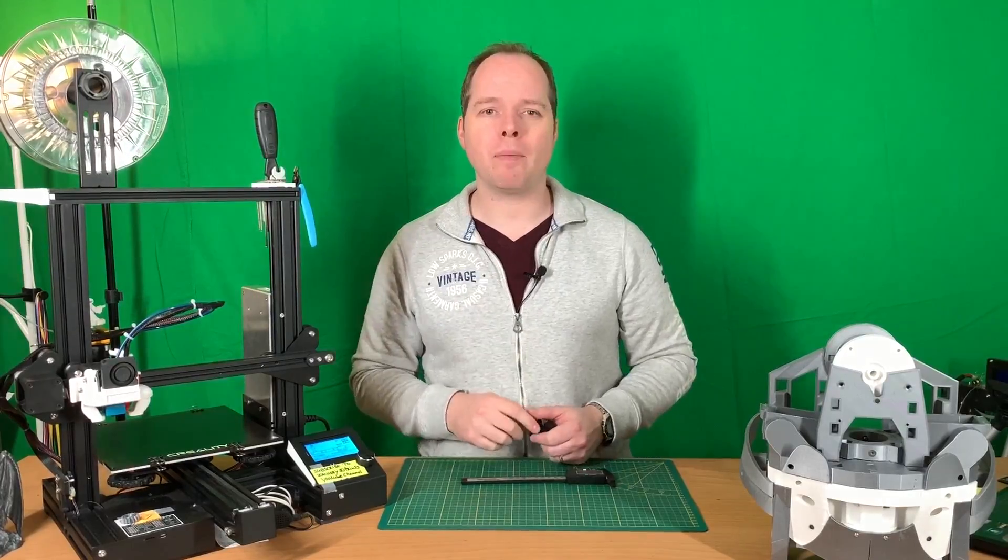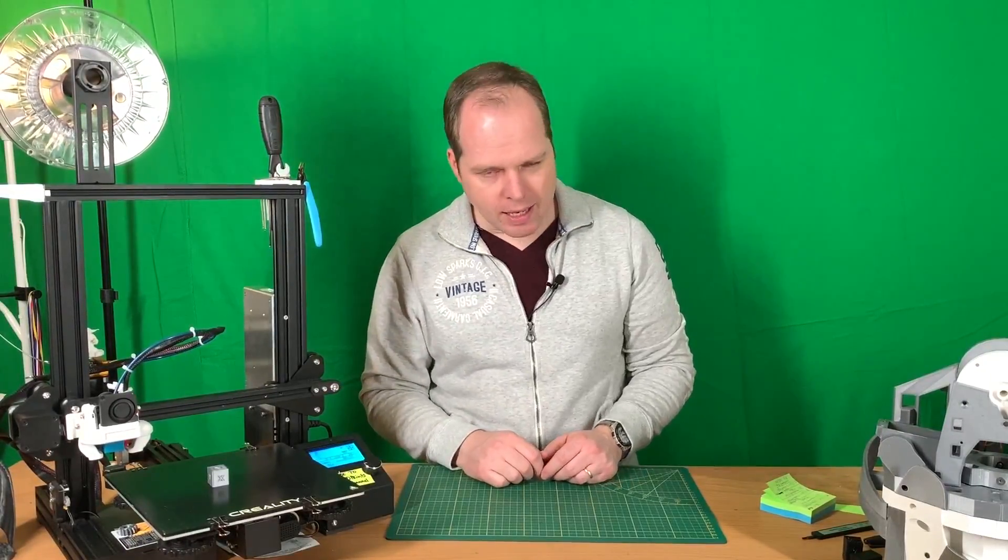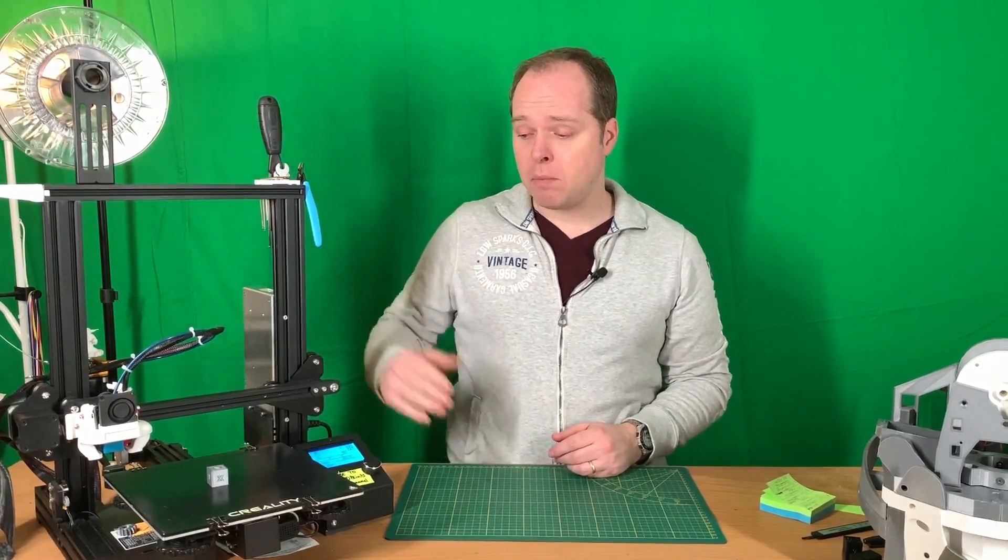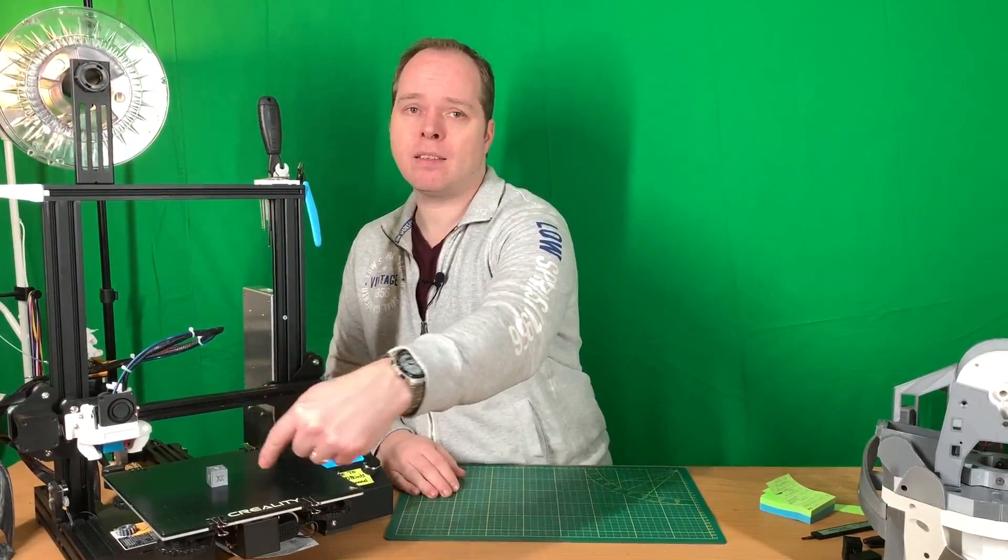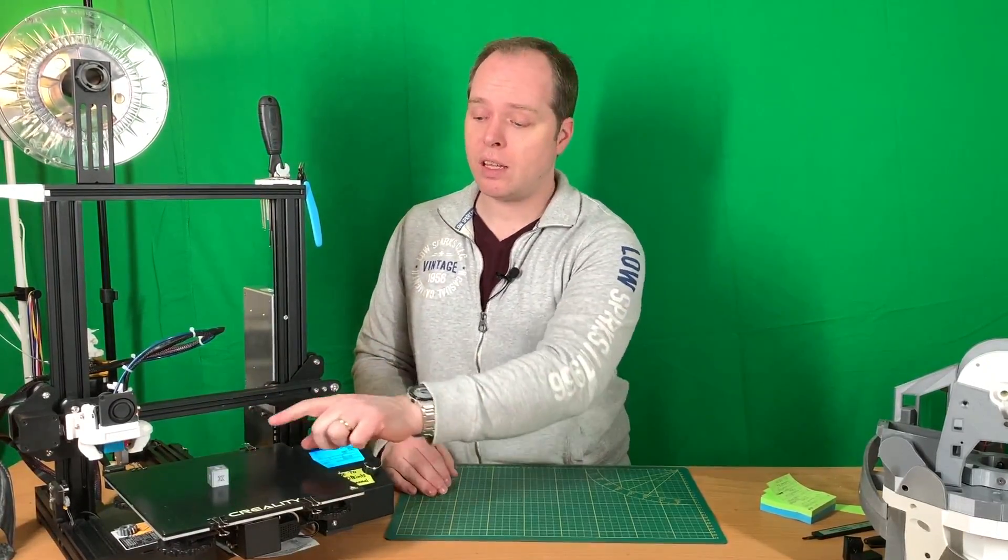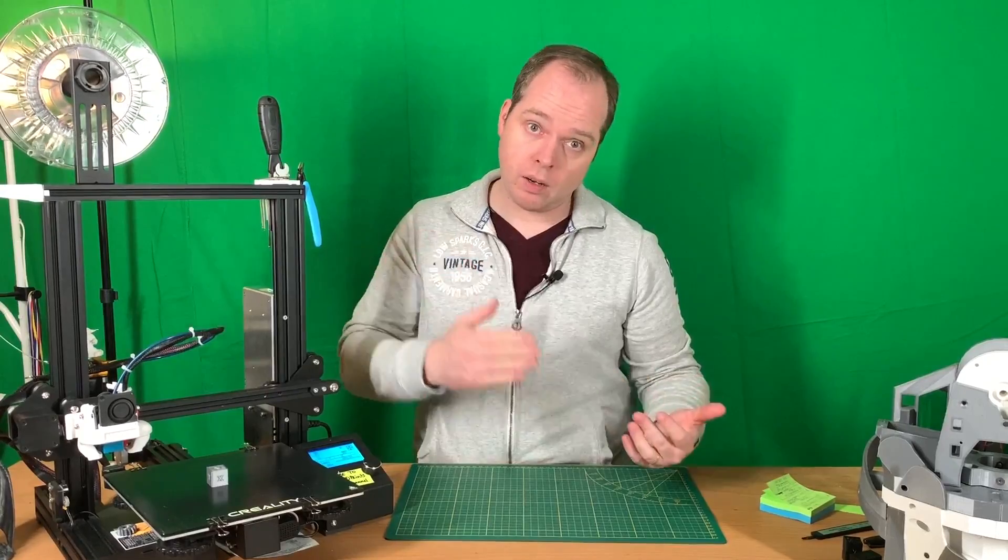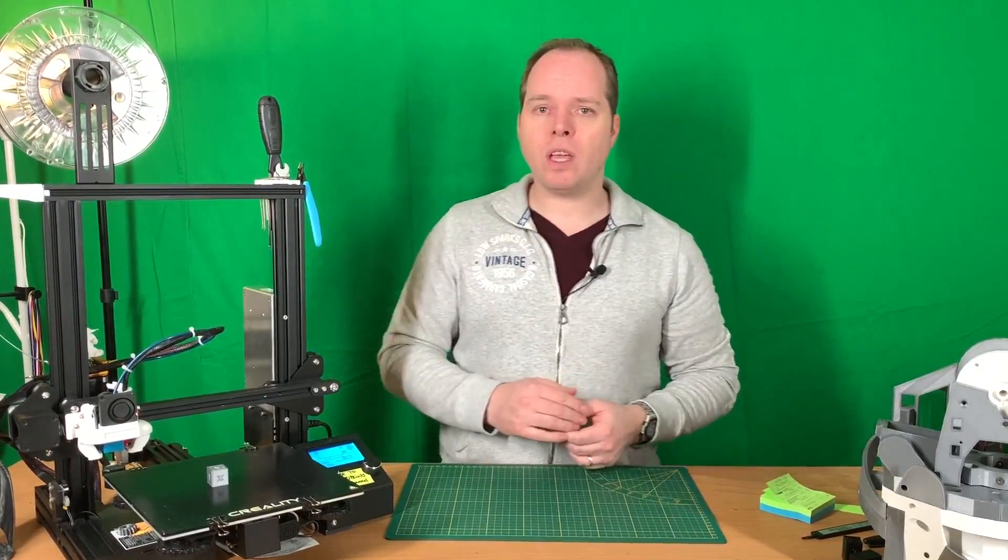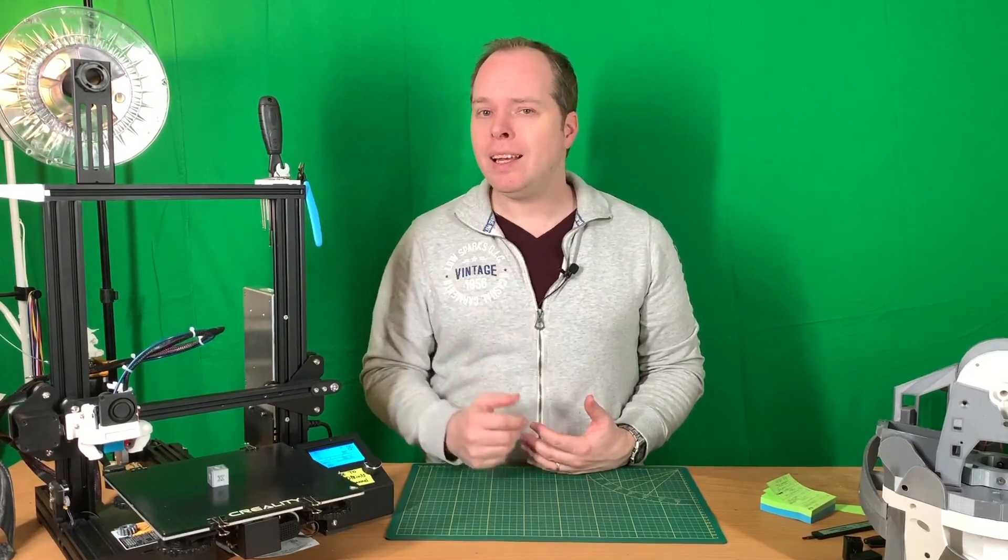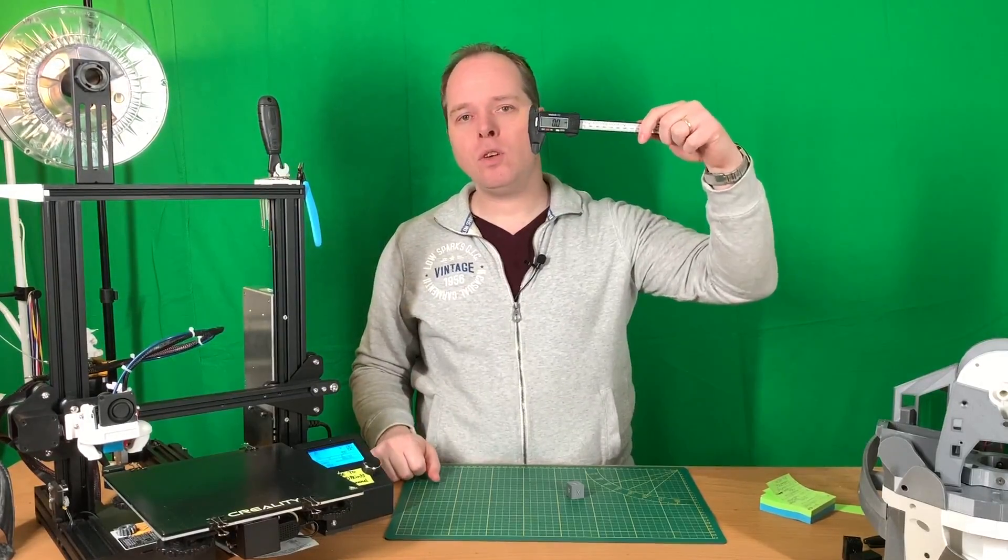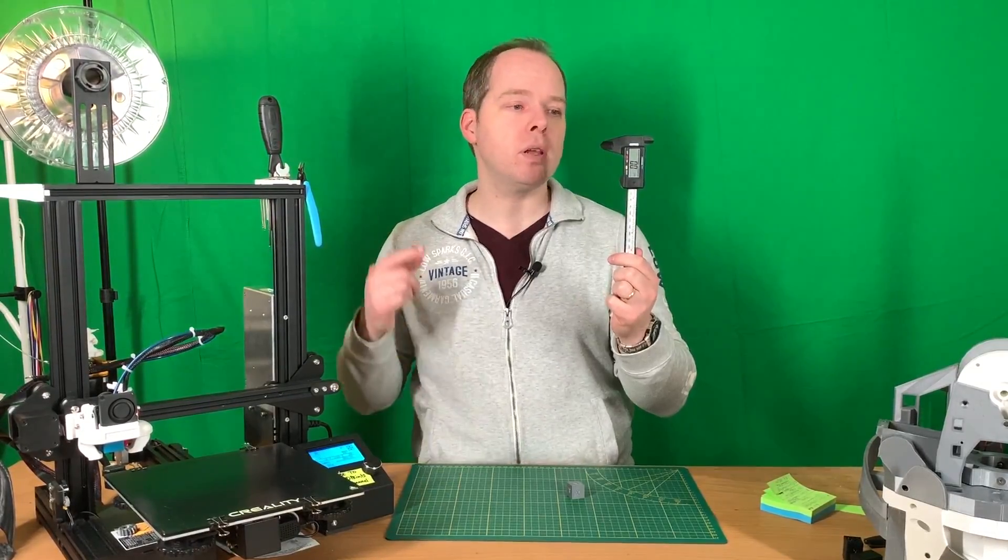So now we are going to print the calibration cube. It's printed, and during the slicing process I made sure that the Y-axis is in this direction, the X-axis is in this direction, and the Z-axis is on top and on the bottom of the calibration cube. Now we are going to take it off the 3D printer and let's see which measurements we're going to get. There is only one tool that you need for 3D printing.